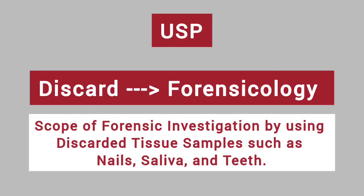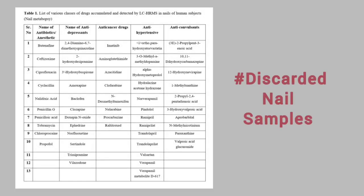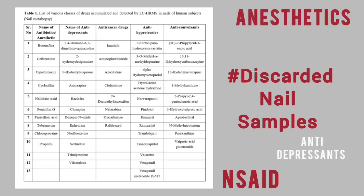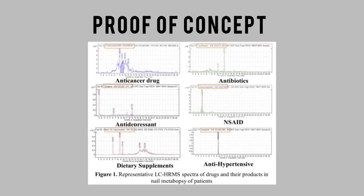In this video, we present the scope of forensic investigation by using discarded tissue samples such as nails, saliva, and teeth through our novel method of VTGE — that is, vertical tube gel electrophoresis. Through discarded nail samples, we have been successfully able to detect non-steroidal anti-inflammatory drugs and other classes of drugs like anesthetics, antidepressants, and anti-cancer drugs. As a proof of concept, we also present mass spectrometry graphs obtained from our analysis.